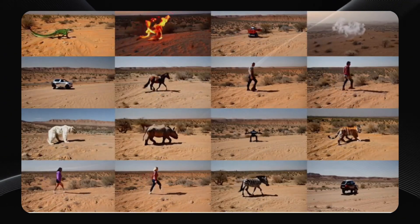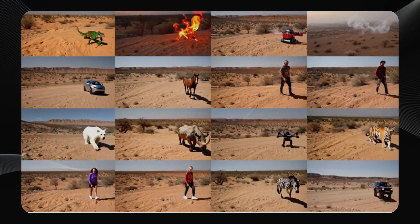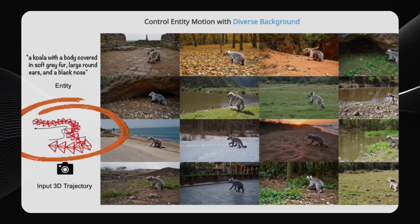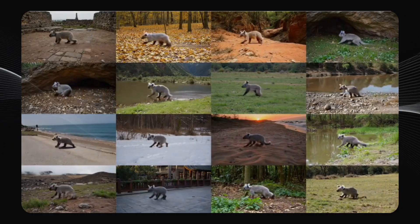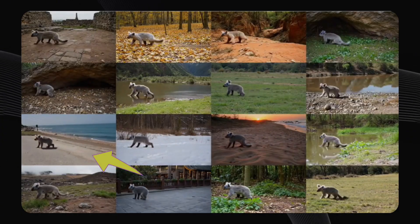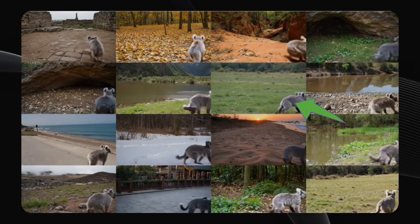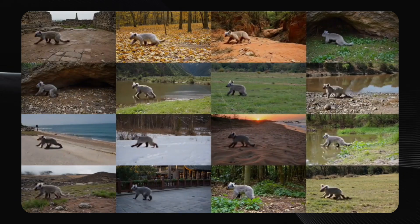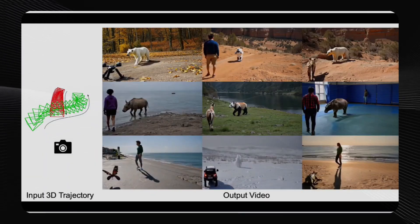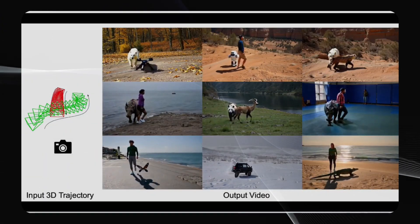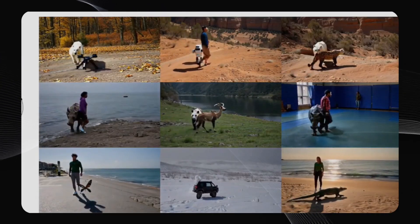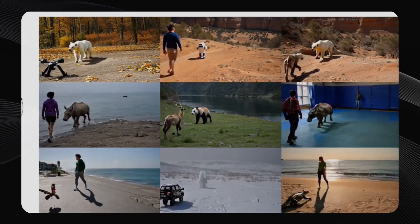You can also swap out the background while keeping the character the same. If we prompt it with a koala and use a trajectory, the koala follows that path in all these videos, but in each video we have a different location prompt — a stone path, a desert, a beach, a snowy field, a grassy field, and so on. You can swap backgrounds and characters, but you can also do both at the same time. Plus, you can input multiple trajectories. With two trajectories, if you specify a polar bear and a drone in the woods, you get this. If you specify a man and a robot in a desert, you get this. It's a very flexible tool.